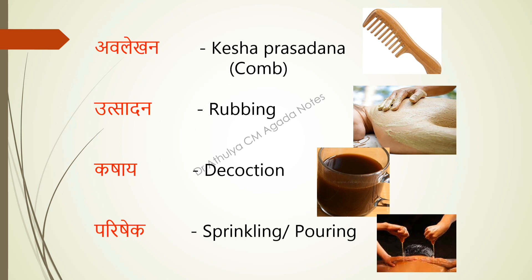Next is Avalekana — in the Tikka it is given as Kesha Prasadhana, which represents the comb. Next is Utsadhana, which means rubbing of medicines over the body; through that also toxins were administered. Next is Kashaya — that is decoction, and can be in the form of any liquid medicine.